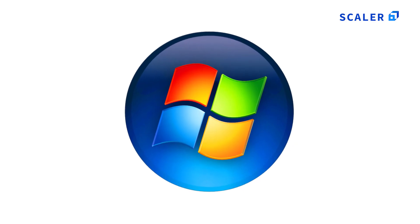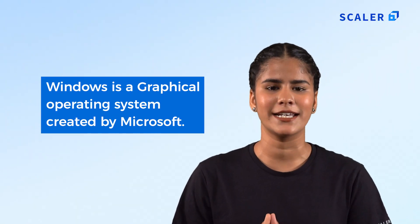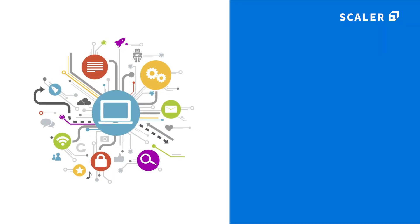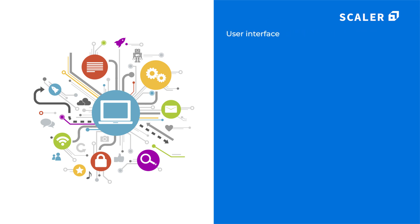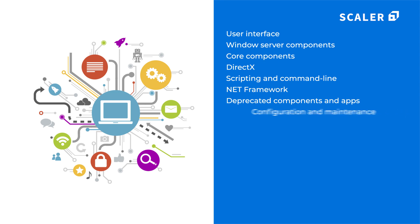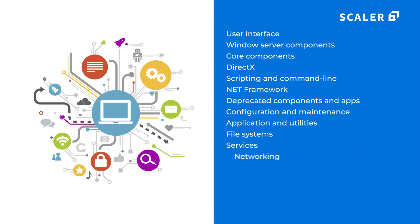What exactly is Windows? Windows is a graphical operating system created by Microsoft. This operating system was made to support personal and professional uses of all types like storing files, running software, playing games, and watching videos. The main components of Windows are user interface, Windows server components, core components, DirectX, scripting and command line, .NET framework, deprecated components and apps, configuration and maintenance, applications and utilities, file system, services, networking, kernel, APIs, and security.